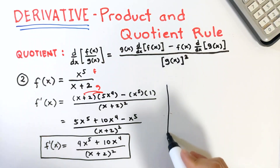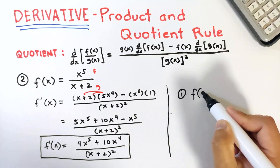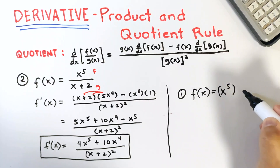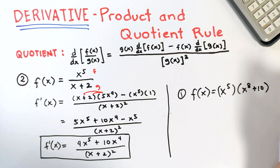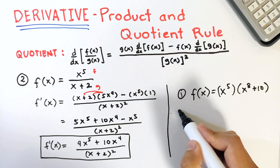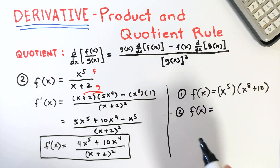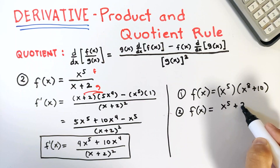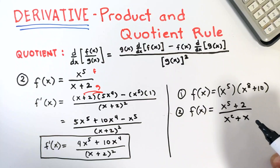You may try answering the following items. Find the derivative of f of x equals x raised to 5 times x raised to 8 plus 10 using the product rule. And for item number 2, try to find the derivative of x raised to 5 plus 2 over x squared plus x using the quotient rule. That's all for this video. Thank you.